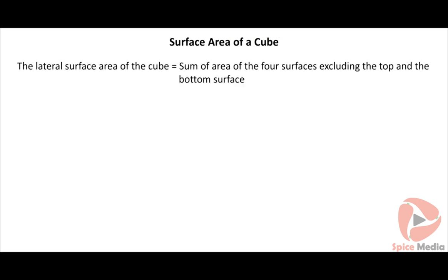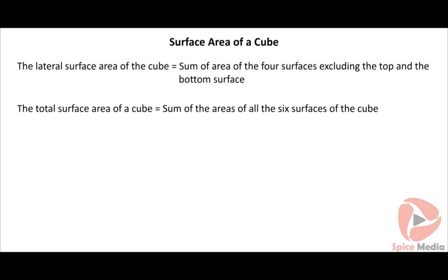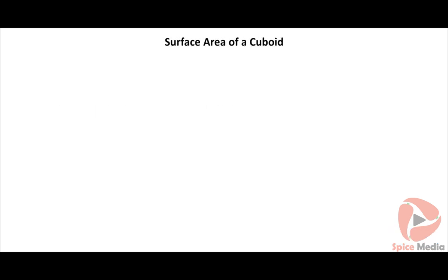The lateral surface area of a cube is obtained by calculating the sum of the areas of the four surfaces of the cube, excluding the top and the bottom surface. The total surface area is found by adding the areas of all six surfaces of the cube. Click the animation button to view the animation for the formulas.